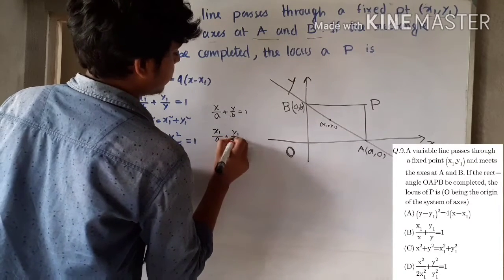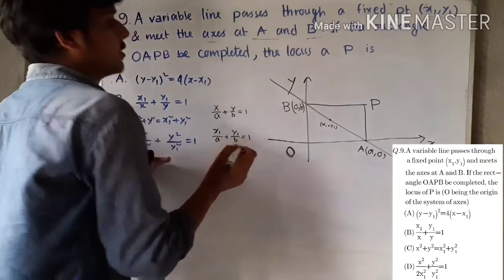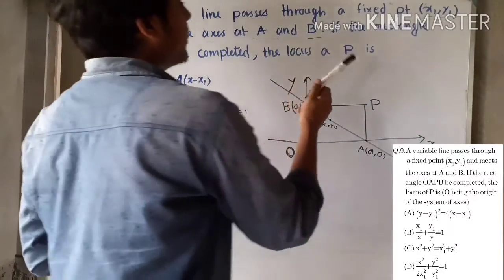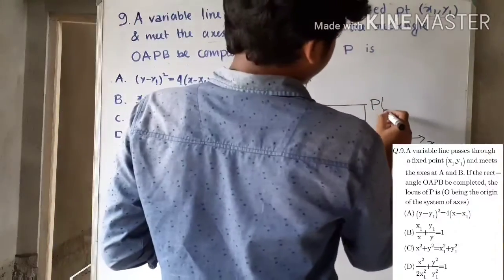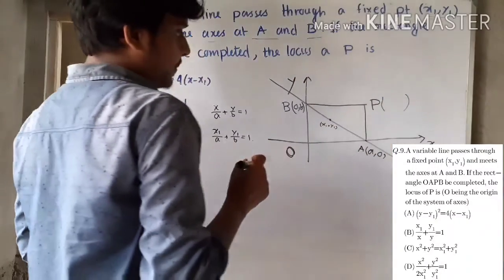Since both are real, x1/a + y1/b equals 1. Now we will find out the locus of P. First of all, we will find the P coordinate.